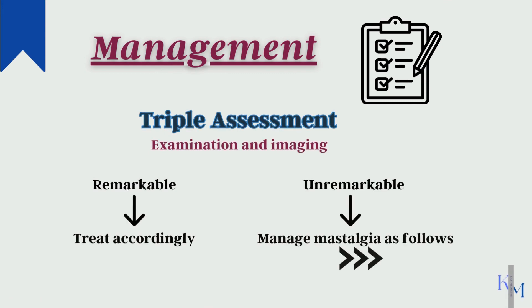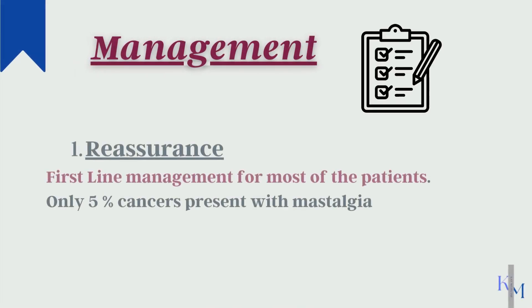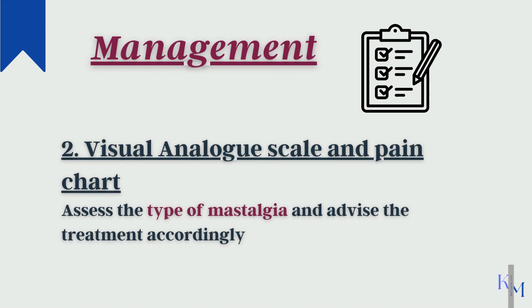The management starts with triple assessment: take a complete history and examine the patient, then do the imaging. If there is underlying pathology, obviously you will treat it. But if the examination and imaging are unremarkable, the first-line treatment is reassurance. Only 5% of cancers are associated with mastalgia, so reassure your patient that it is not cancerous and does not predispose her to developing cancer in the future. Tight brassieres are also recommended. If mastalgia is discomforting, give the patient a visual analog scale for pain assessment for a month.